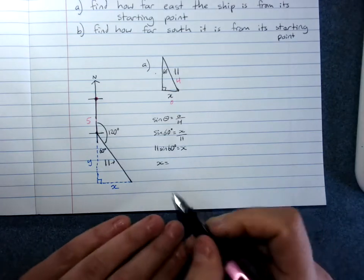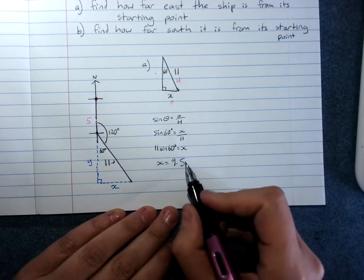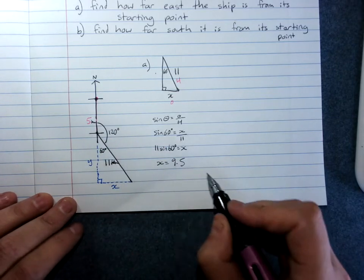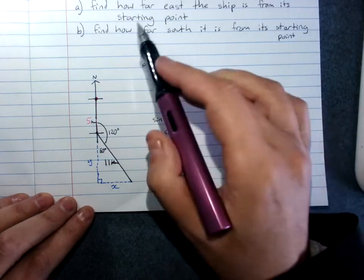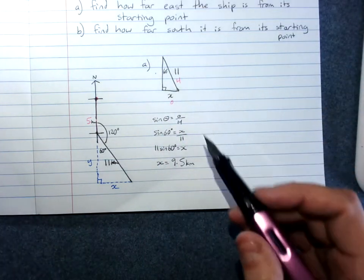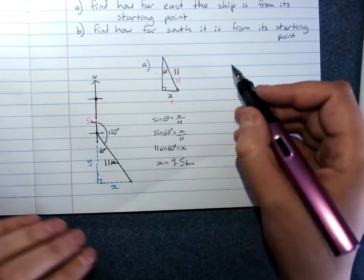To evaluate, and we were traveling in kilometres. I should have put kilometres on my diagram. Because it's a word question, you give a word answer, which would be, therefore the ship is 9.5 kilometres east of its starting point.